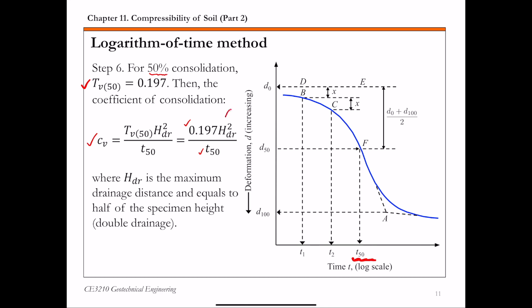This Hdr square term here, Hdr is the maximum drainage distance. For 1D consolidation test with double drainage, it's basically equals to half of the specimen height. With this, you can calculate coefficient of consolidation.